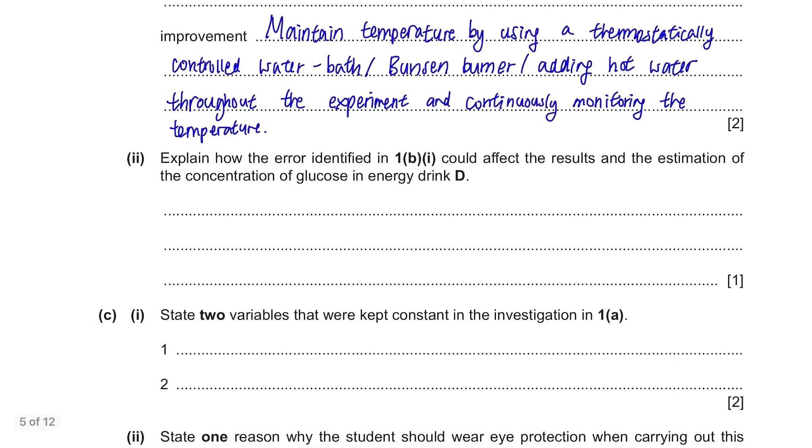Explain how the error identified in 1b1 could affect the results and the estimation of the concentration of glucose in energy drink D. There can be many consequences such as the time taken for the color to change will be slower since the temperature of the water bath is not hot enough for the reaction to occur. We won't be able to identify the concentration of glucose with accuracy and the concentration can be underestimated since the time taken will be longer than usual.